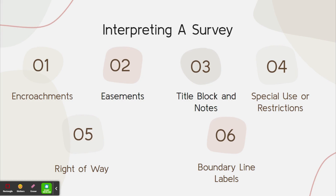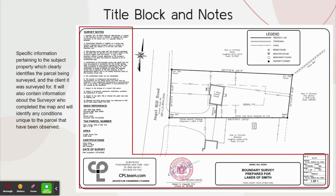Next is the title block and notes. This shows specific information pertaining to the subject property which clearly identifies the parcel being surveyed and the client it was surveyed for. It will also contain information about the surveyor who completed the map and will identify any conditions unique to the parcel that have been observed. This also shows our deed reference for the current deed for the property, our tax parcel number which should be on file with the county or municipality, an area showing the square footage or acreage of the property, certifications which indicate who the map can be used for. In the case of a mortgage property, it will usually be the homeowner, the lender or the bank, and the title company, and also the date of the survey and when it was completed.